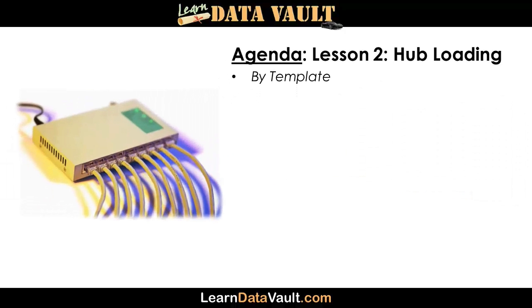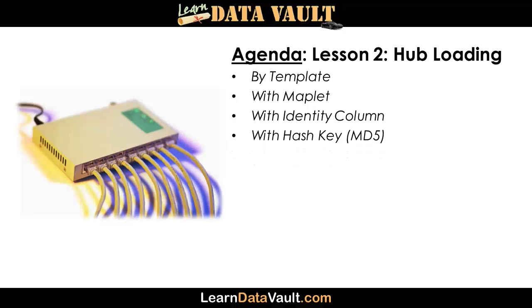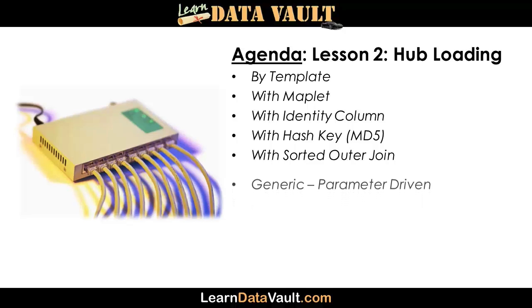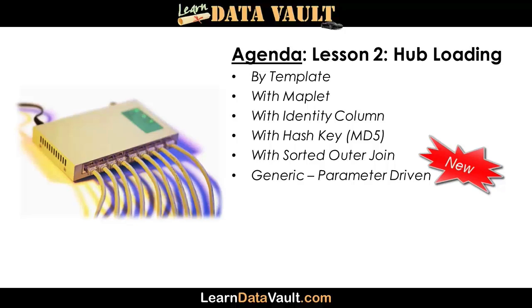Lesson two covers hub loads. I'm going to start with the template — the one we typically teach in certification class — then move on to using a maplet, and show you how to use an identity column. The first two, the maplet and the template, use the standard sequence generator object in Informatica. Then I'll show you how to bulk load using the identity column. Then I'm going to change the map and show you how to use it with a hash key, in this case MD5 — you could also use SHA1. You need to pick a standard and stick with it. Then I'll show you how to load a hub with sorted outer joins, and then give you a new Data Vault 2.0 generic parameter-driven mapping style that would allow you to write one hub load map and one reusable session for all hubs that have one business key.